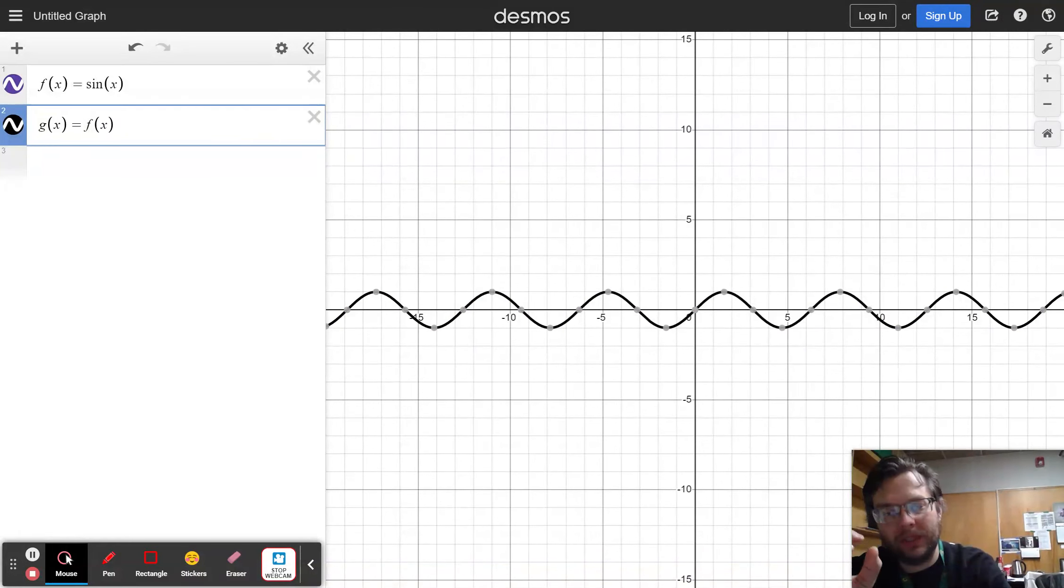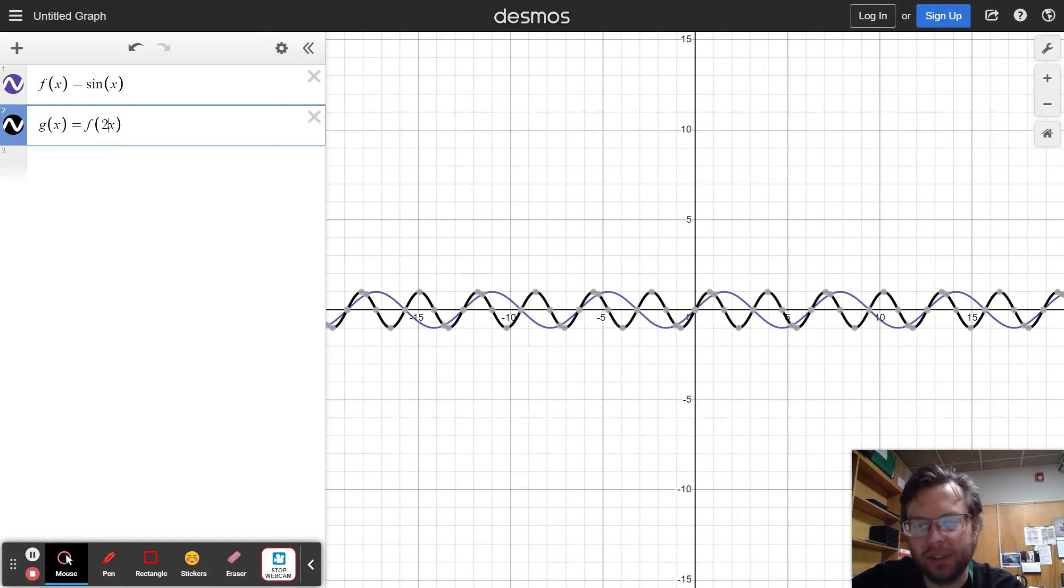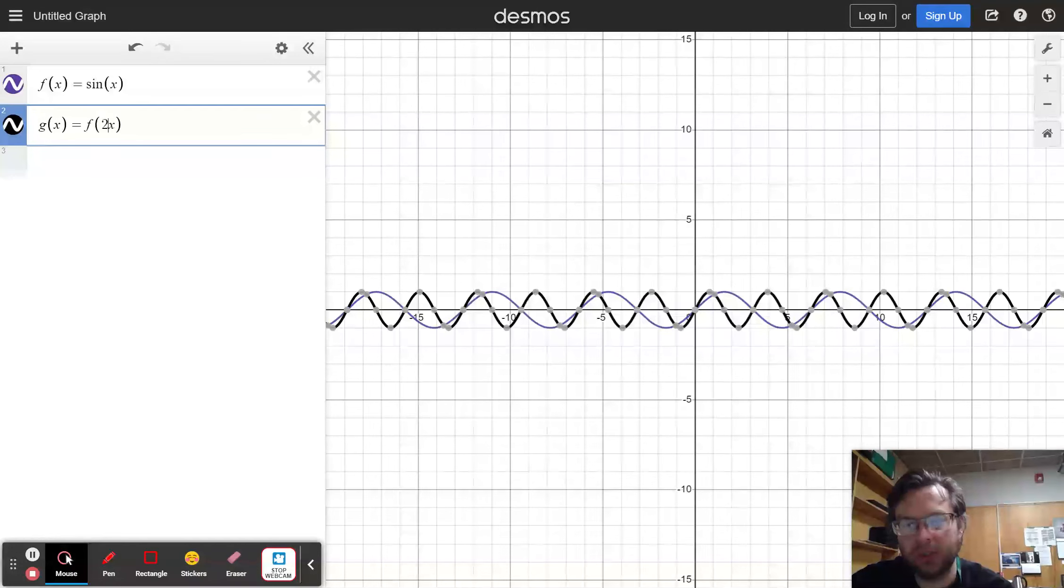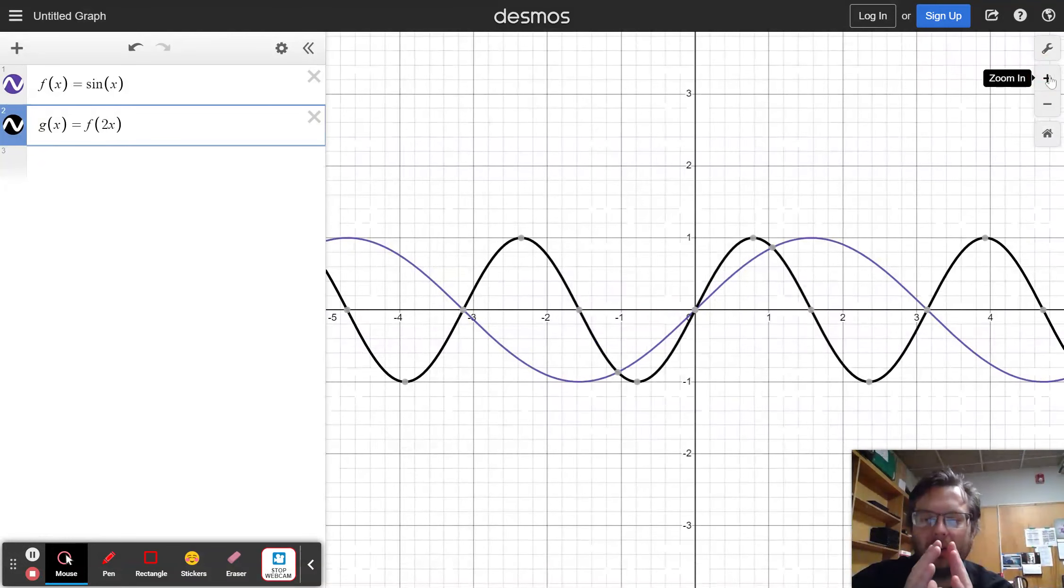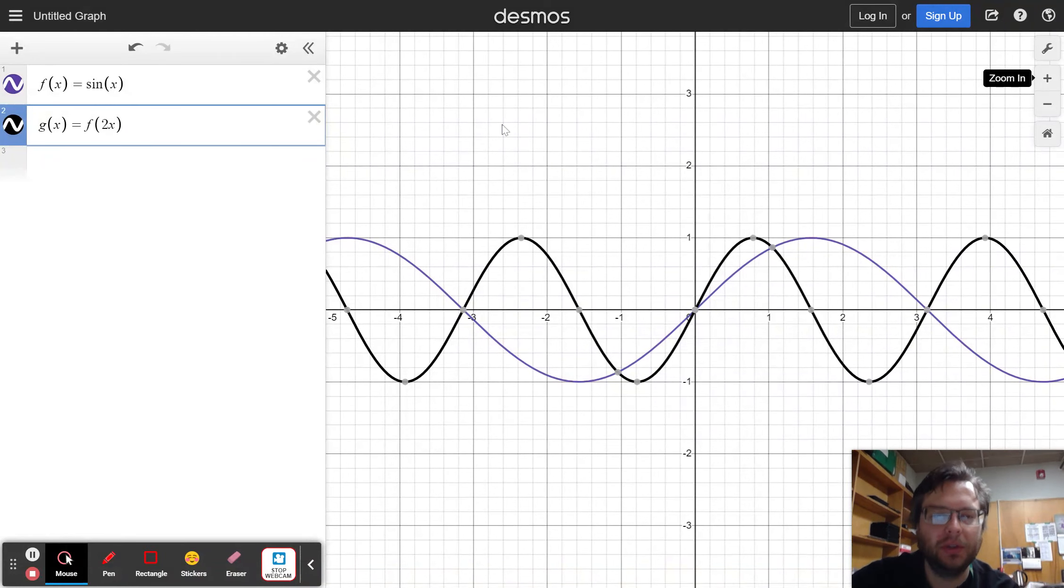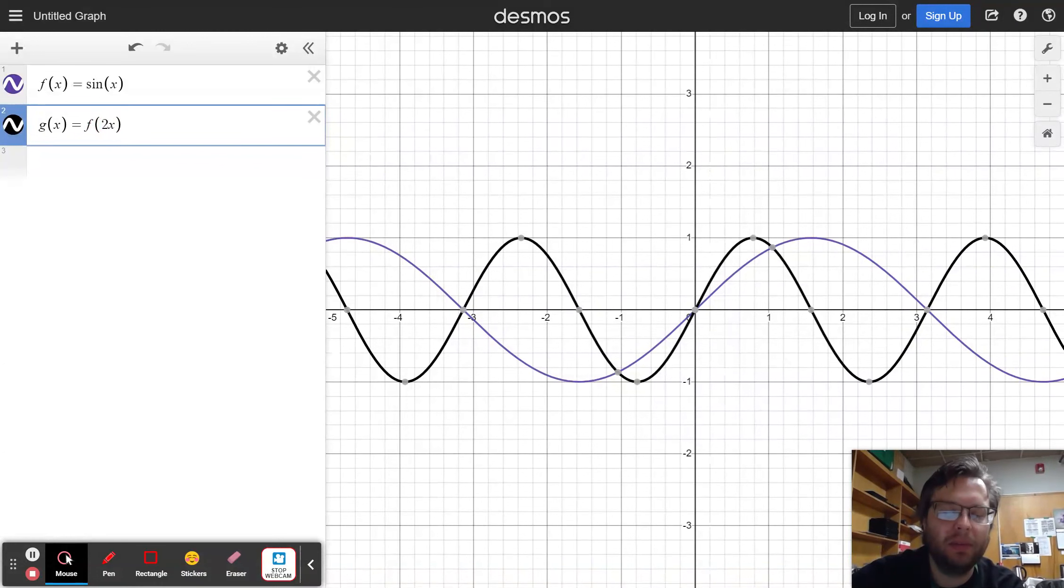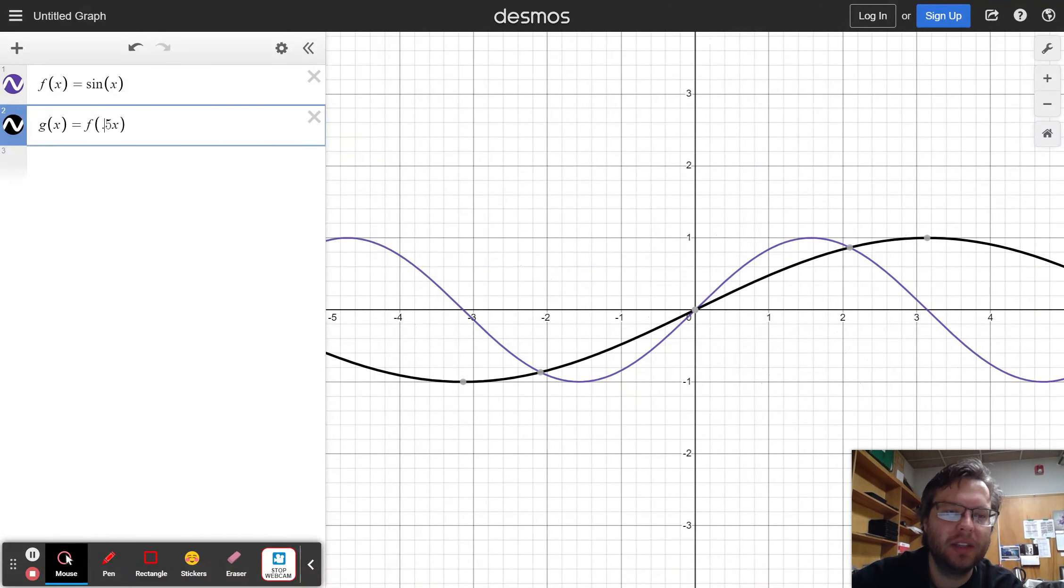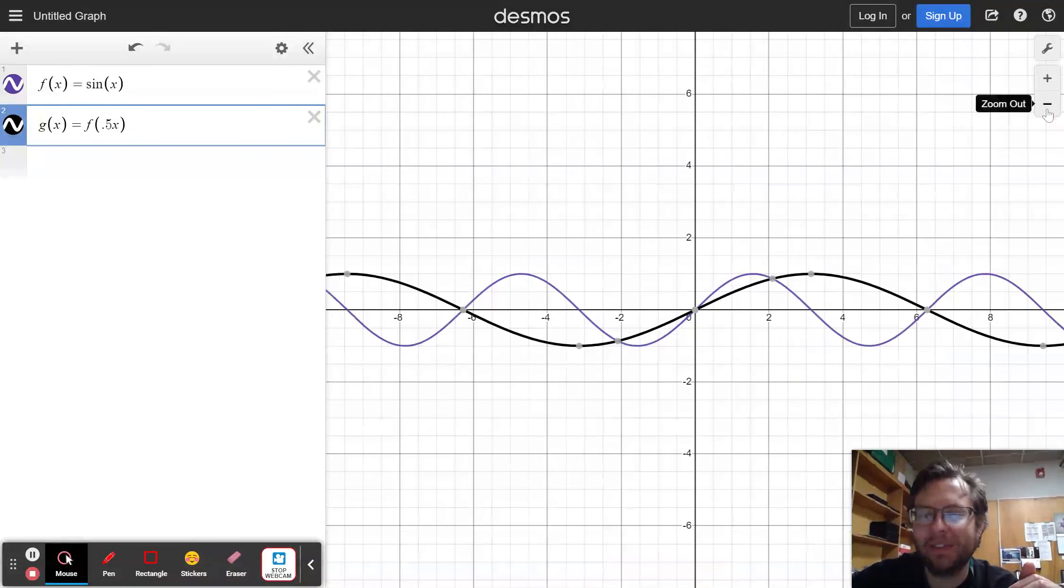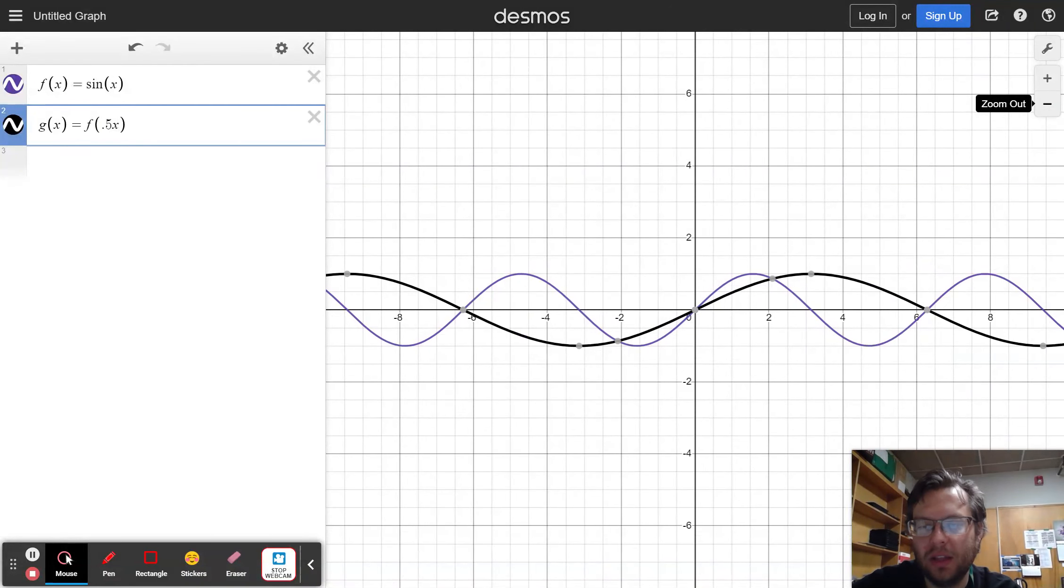Just like with translating, doing things inside the parentheses move things left or right. So, let's see what happens. If I multiply by a number like 2 on the inside of the function, it didn't get taller or shorter. All that happened to my function was it got narrower. The x-values got twice as close to the y-axis. If I multiply by a number like 5, it's 5 times as close. If I multiply by a number smaller than 1, like 0.5, now it is half as close to the y-axis.